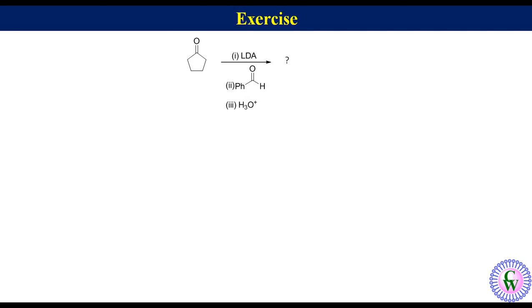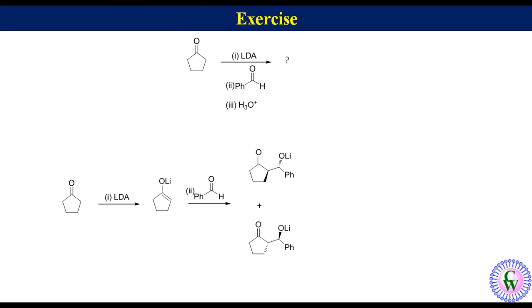Let's have another example in which we have to predict the structure of the product for the reaction of cyclopentanone with benzaldehyde in the presence of LDA. Cyclopentanone in the presence of LDA produces an enolate which exists only in trans configuration. Since trans enolate after reaction with aldehyde gives anti-aldol, this trans enolate after reaction with benzaldehyde will give a racemic mixture of the lithium salt of anti-aldol, which after acidic workup produces a racemic mixture of anti-aldols.